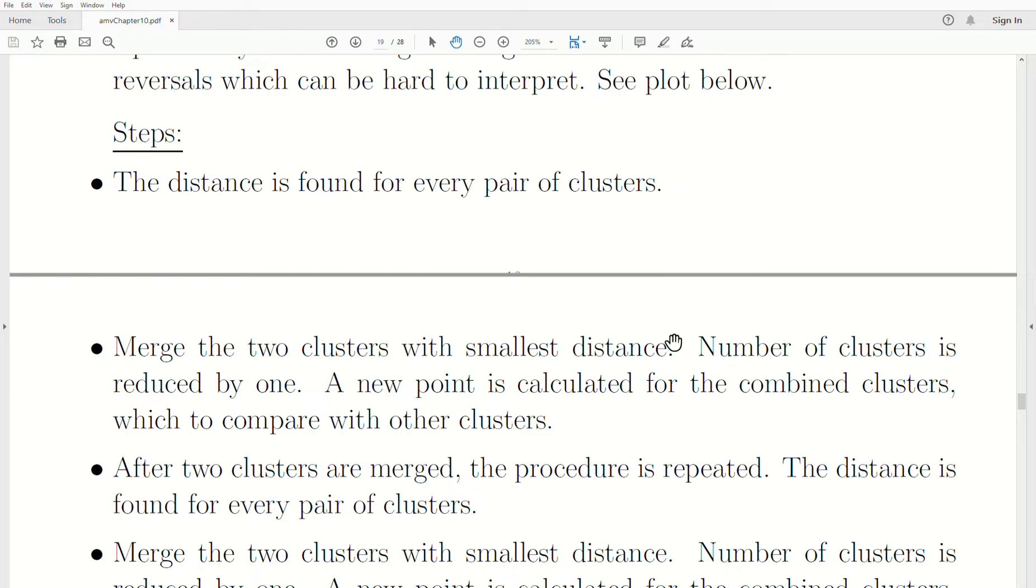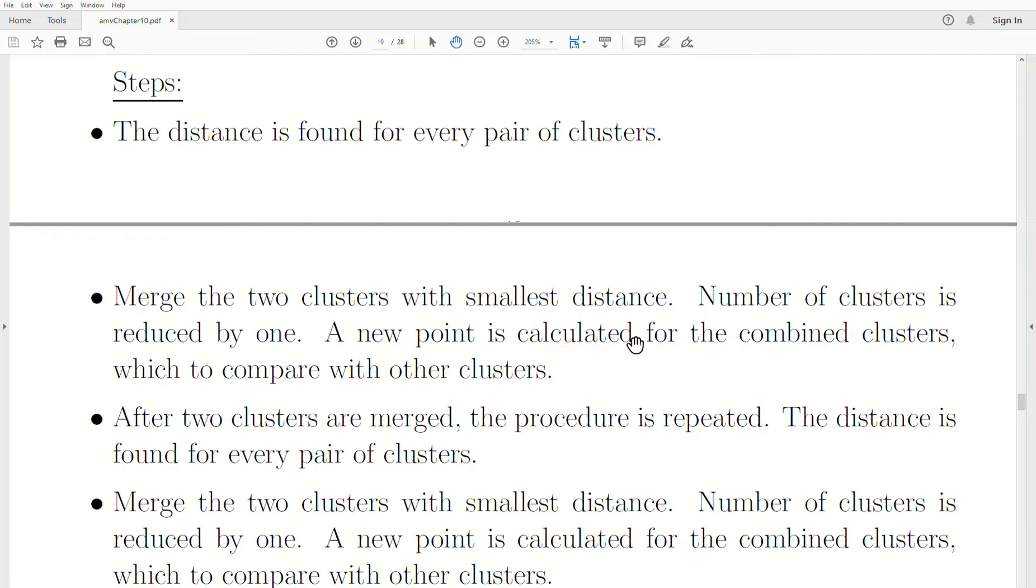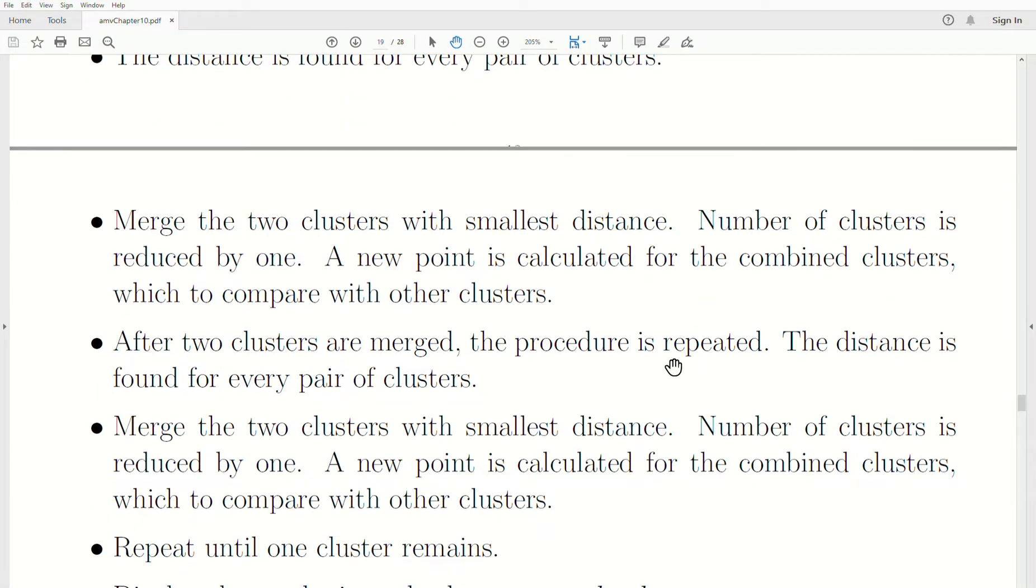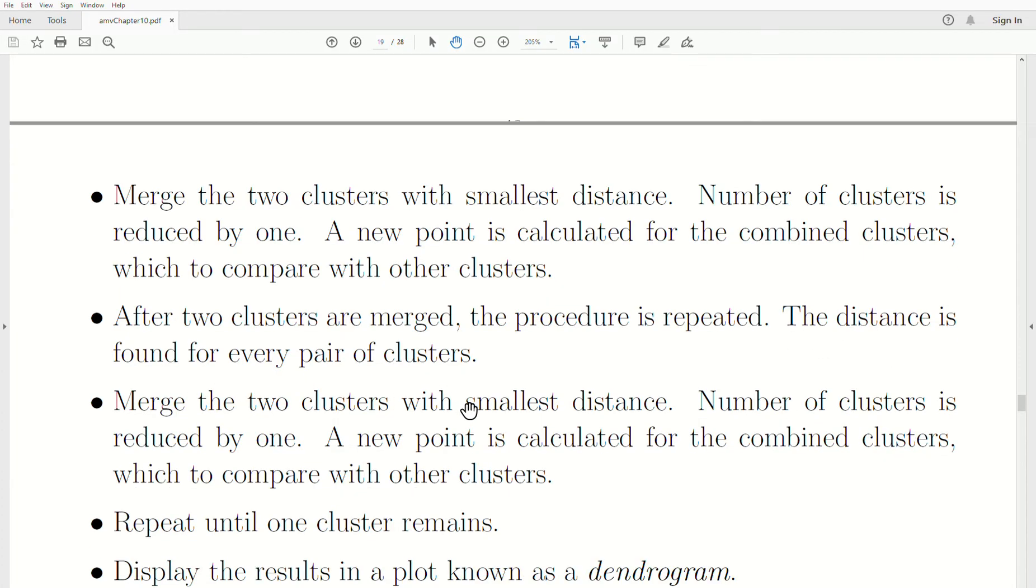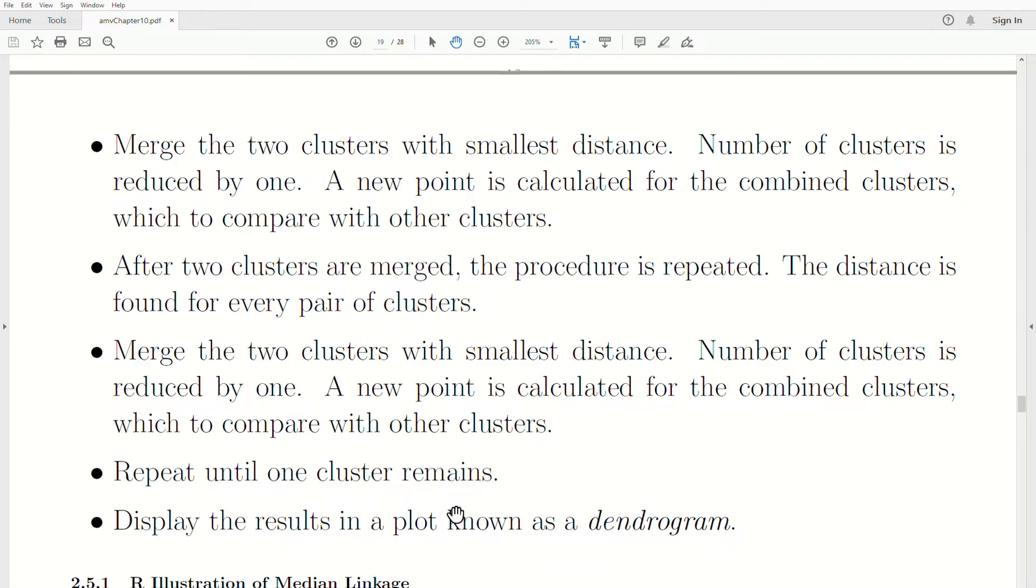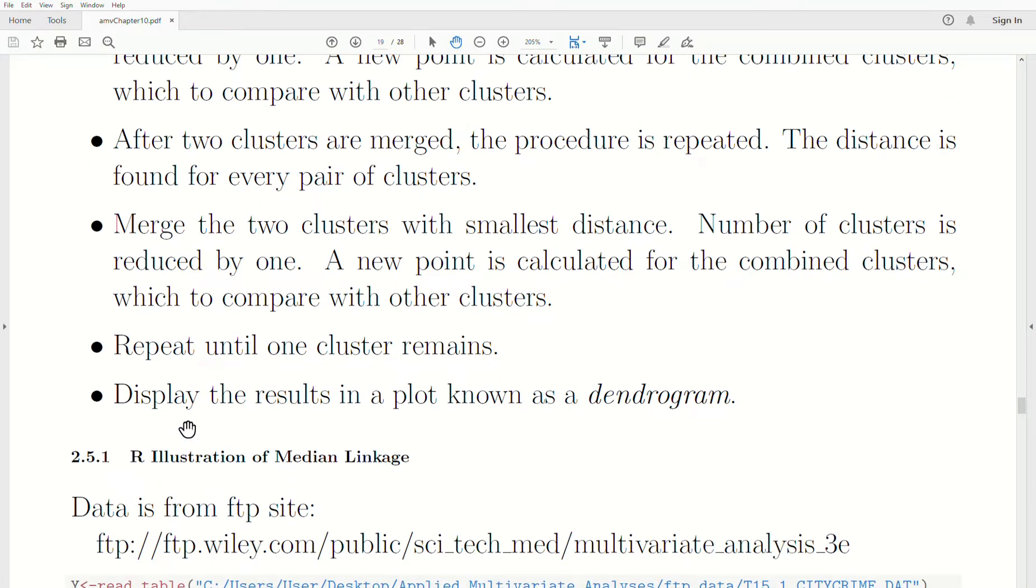The steps are very similar to the centroid. Distance is found between every pair of clusters. Merge two clusters with the smallest distance. The number of clusters is reduced by one. A new point is calculated for the combined clusters. After two clusters merge, the procedure is repeated. This is just repeated until one cluster remains. And then I like to display the results in a plot known as a dendrogram.